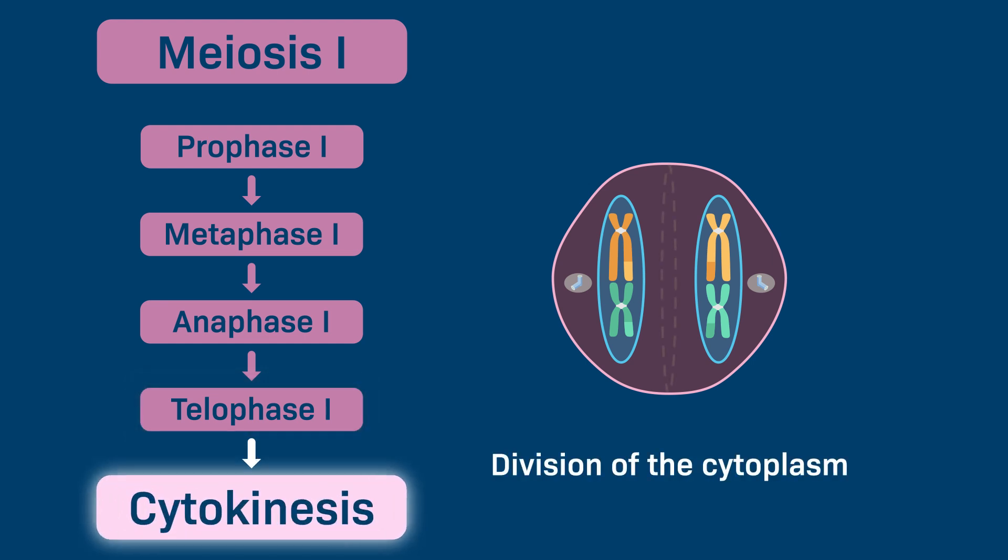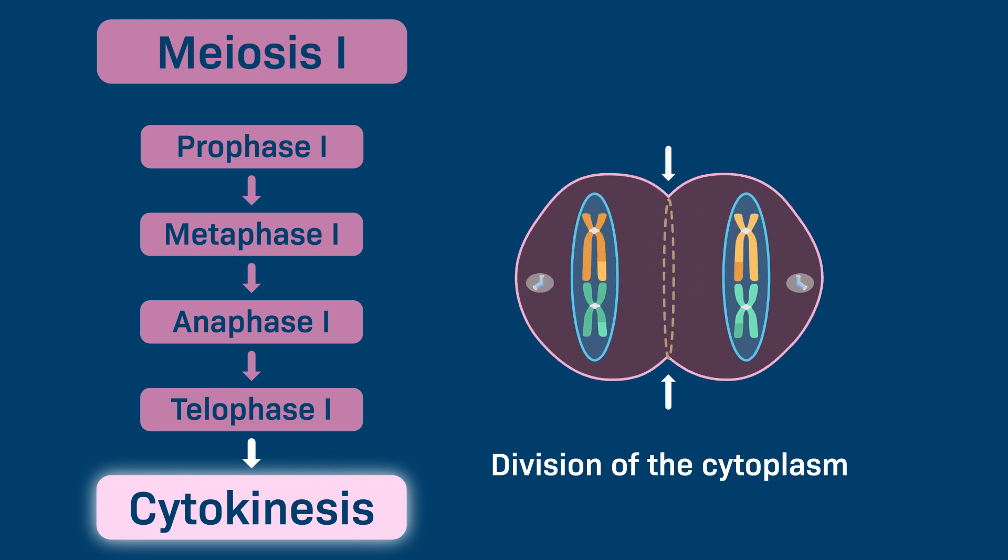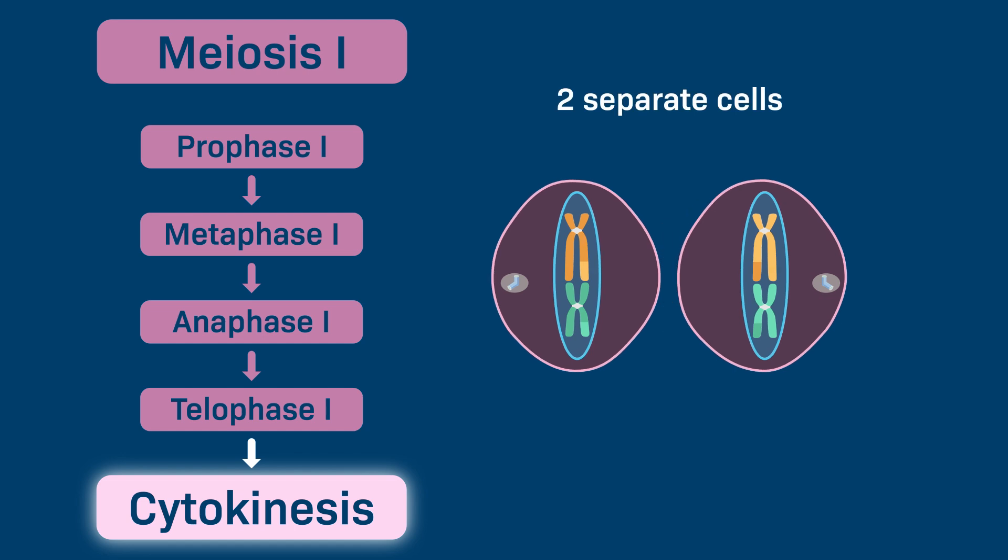Cytokinesis, which is the division of the cytoplasm, occurs toward the end of meiosis I. During cytokinesis, the cell is pinched in half, which eventually produces two separate cells.